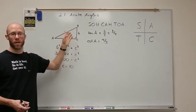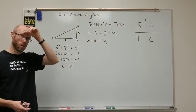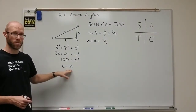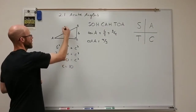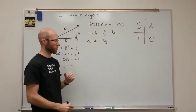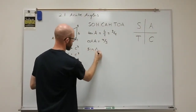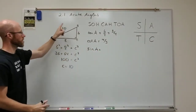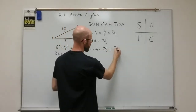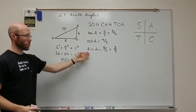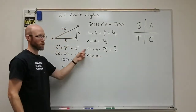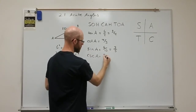I won't worry about units right now. Now that c equals 10, I can find the other four trig functions. Starting with sine: the sine of A is opposite over hypotenuse, which is 6 over 10, reducing to three-fifths. The cosecant is the reciprocal of the sine, so we flip three-fifths to get five-thirds.